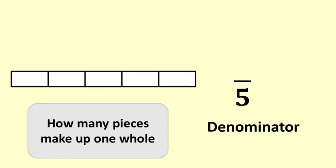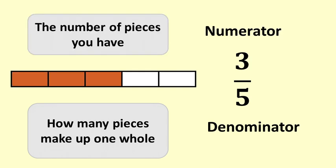The denominator is the number on the bottom of the fraction that tells you the size of each piece by telling you how many pieces make up one whole. The numerator is the number on the top that tells you how many pieces you have.